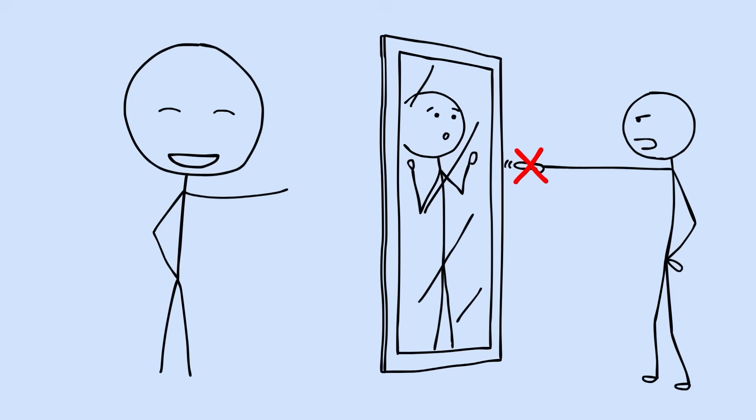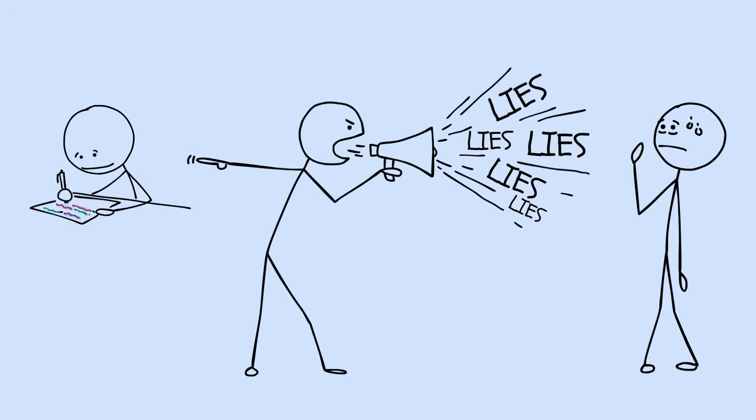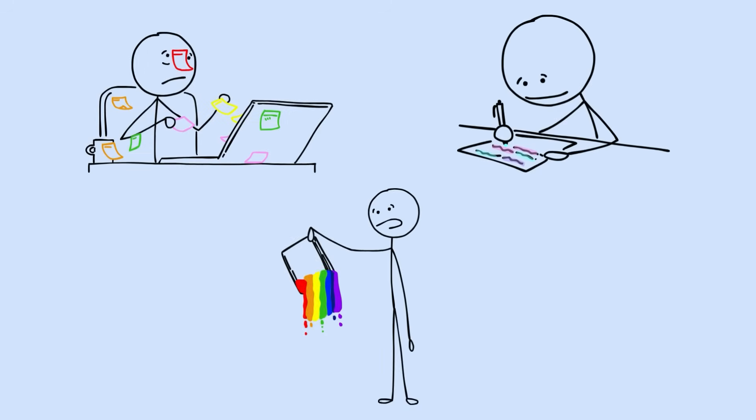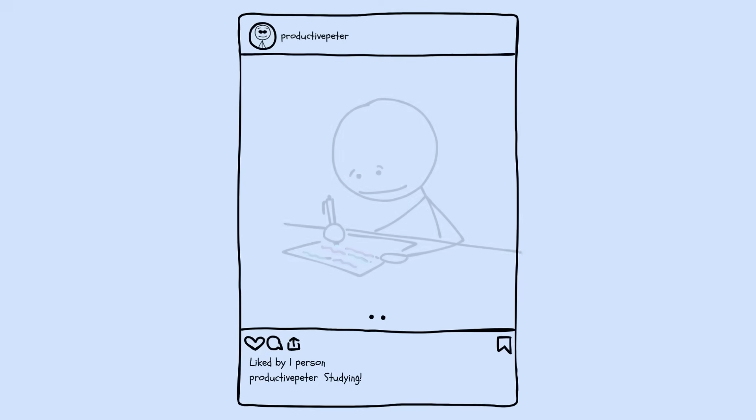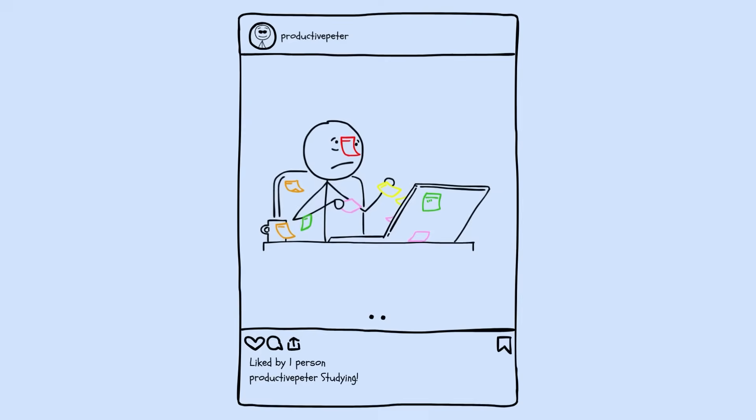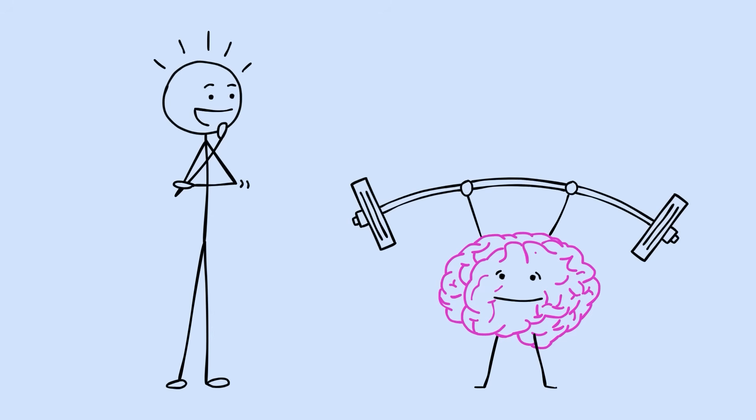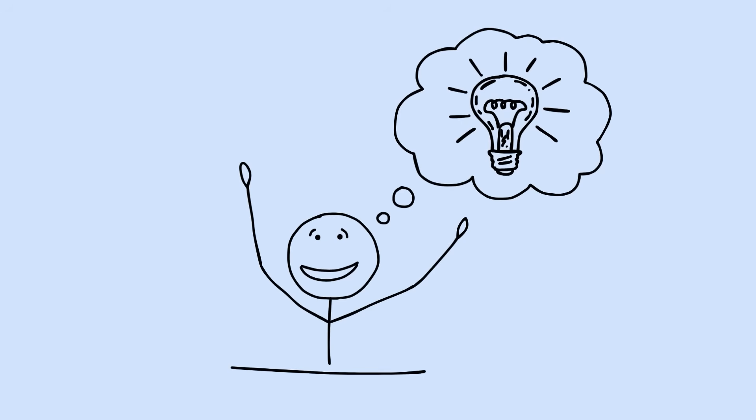This isn't your fault. You've been lied to about what effective studying looks like. The colorful, organized, aesthetically pleasing study methods that feel productive are designed for Instagram, not learning. But here's the good news. Once you understand how your brain actually works, you unlock a new level of control.